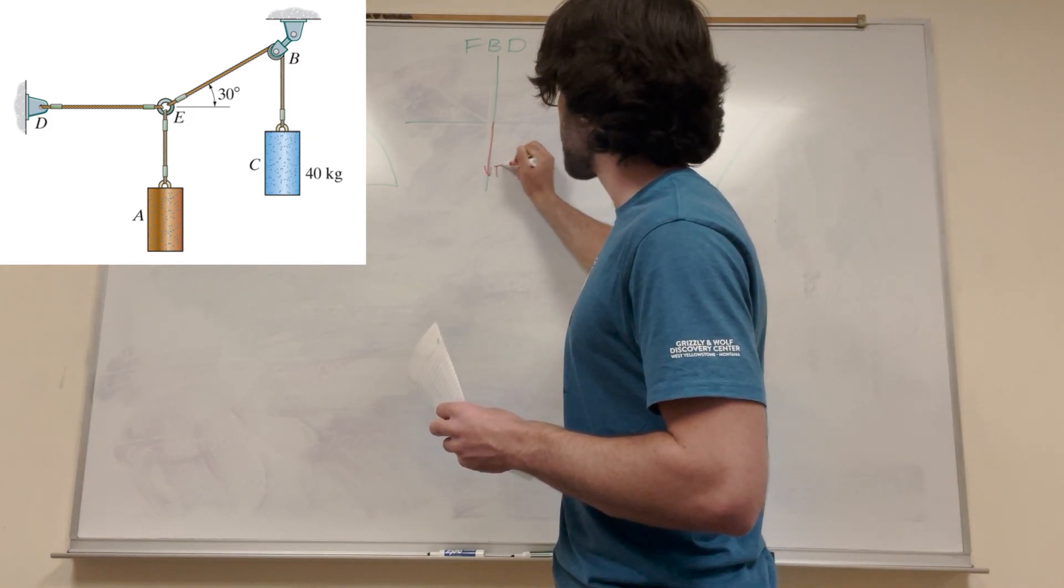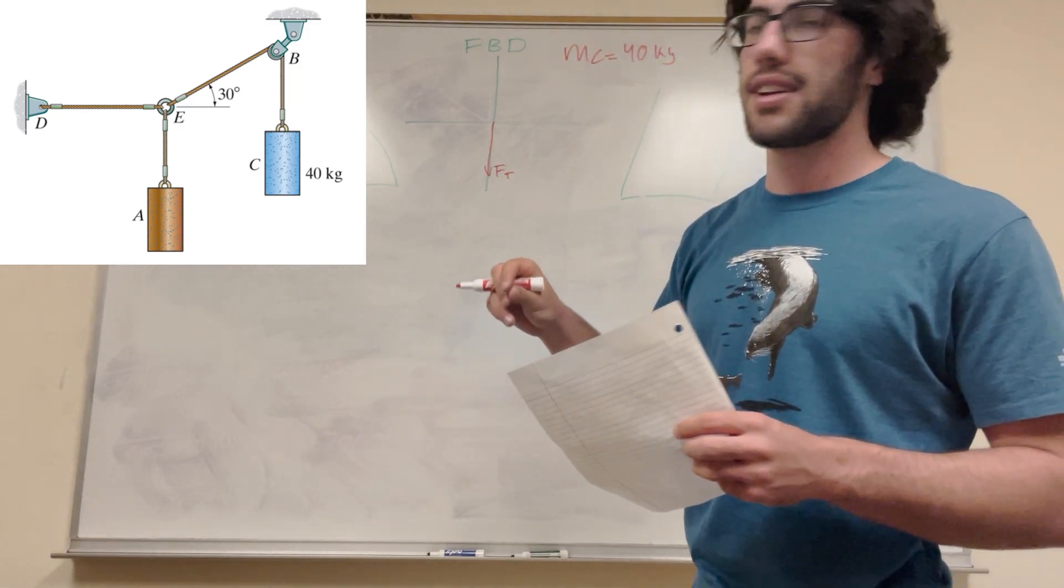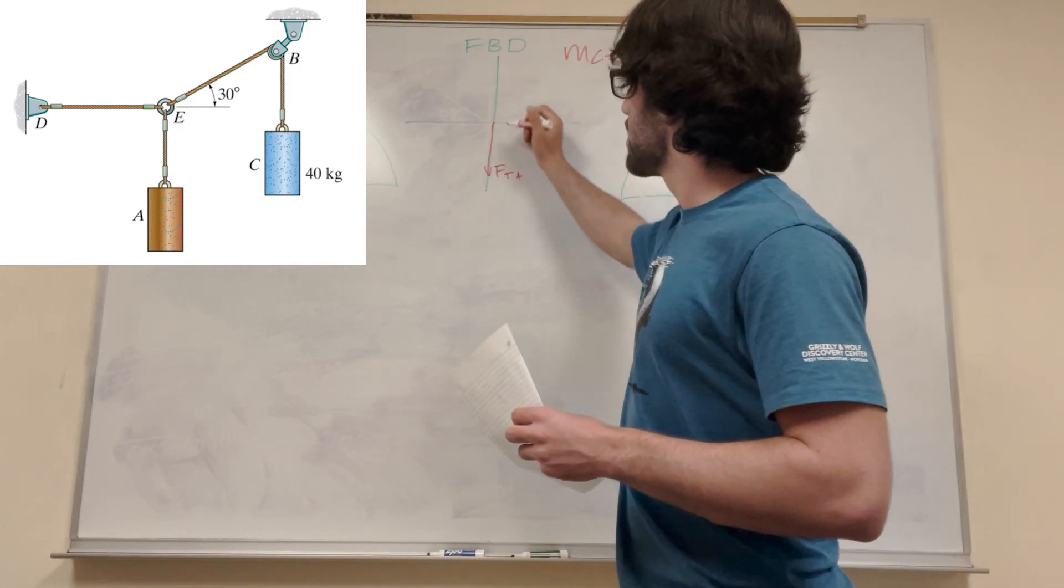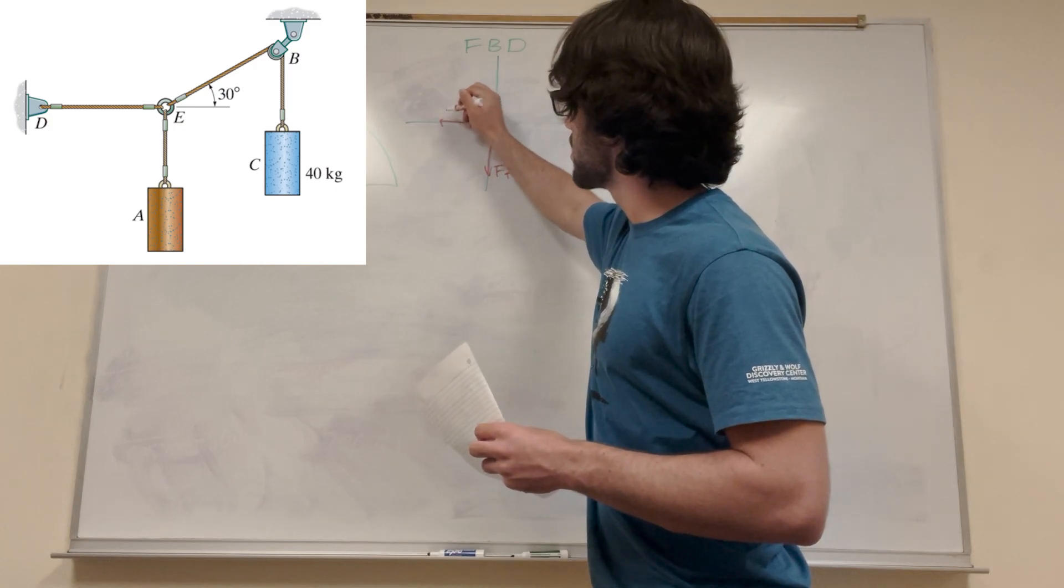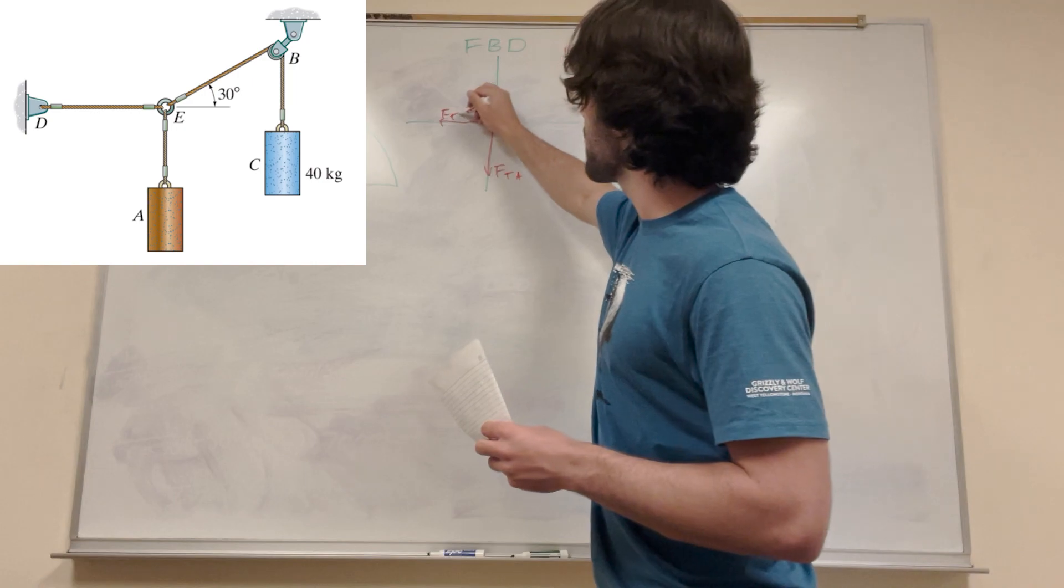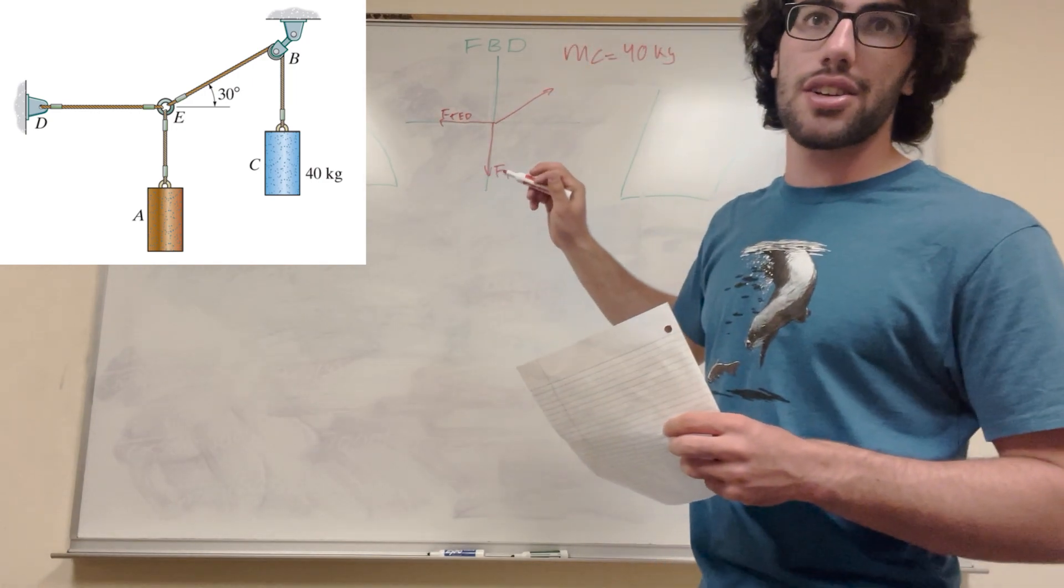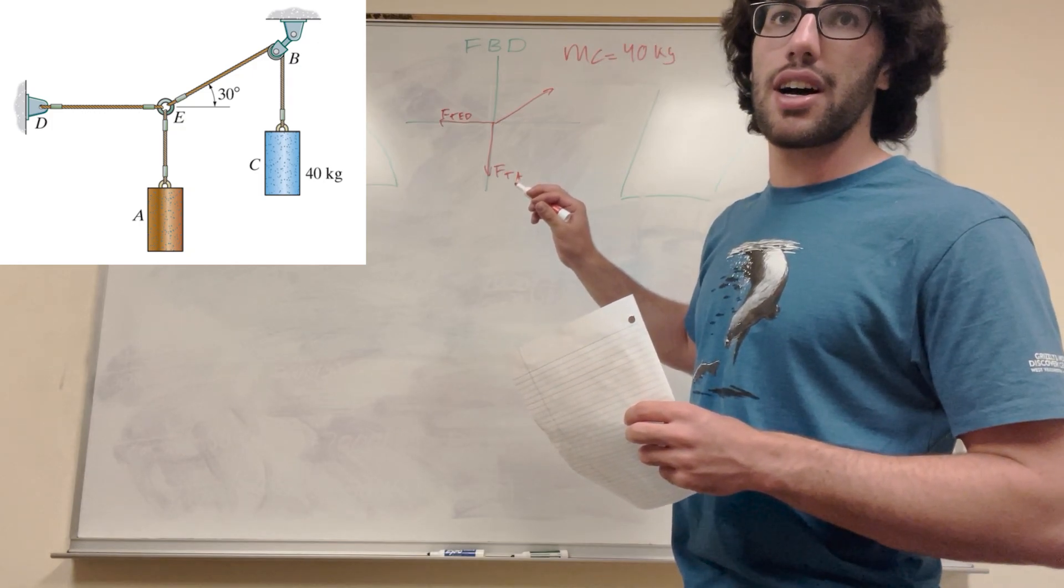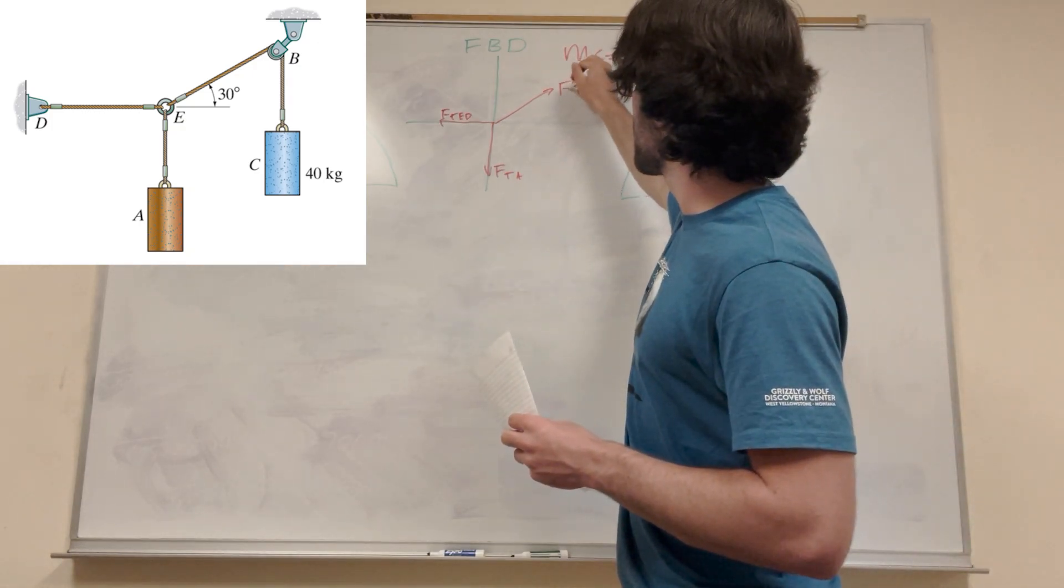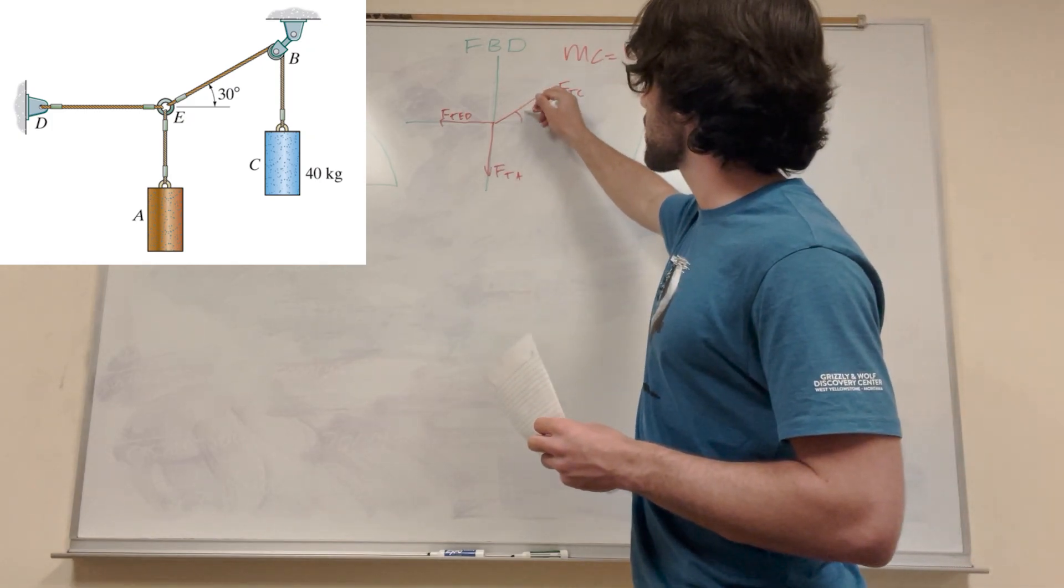So what we have here is a pulley that's hanging C. So let's go ahead and start. We're gonna make our free body diagram at point E, because that's where all of the forces are going away. We know there's a force going down there, left, and up to the right, so let's draw those. So this is force tension, the tension force of the mass from A. This is another tension force, force of tension E to D, and then this is another tension force, but we're gonna label that force tension C, because it's from the mass C, and we know that this angle is 30 degrees.